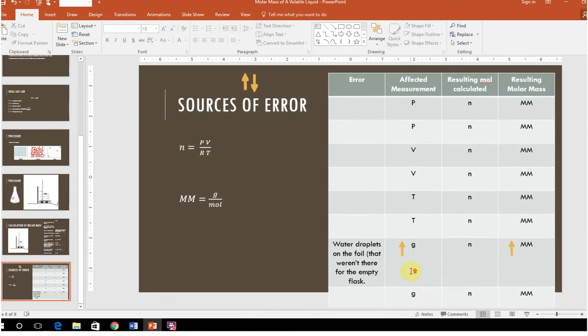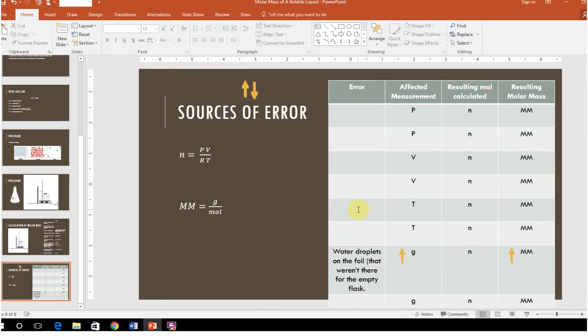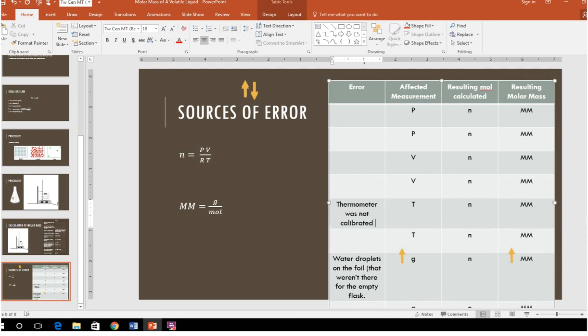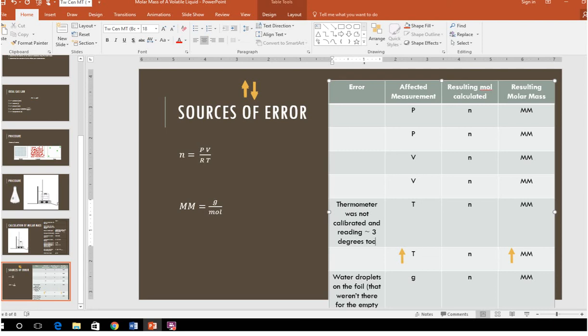Now, if my grams are too high, because grams is in the top of this equation, it's going to make my molar mass be calculated as too high. Now, on the other hand, maybe my thermometer wasn't calibrated. I'm just trying to give you an example and let you see how I would think about it. And my thermometer was reading about three degrees too high.